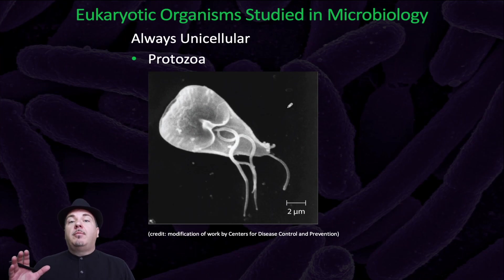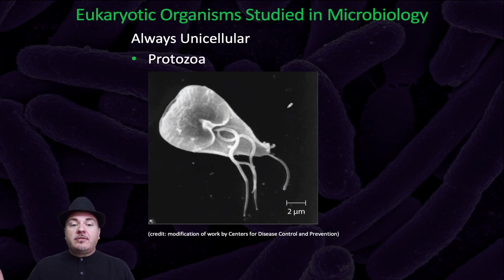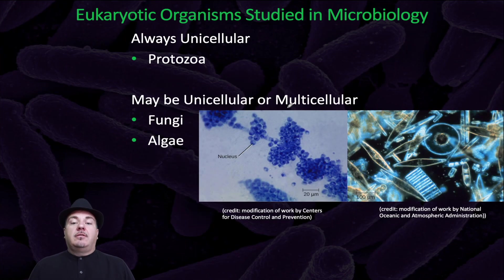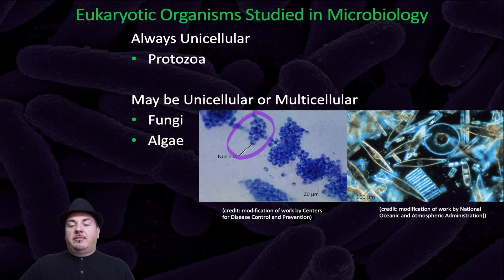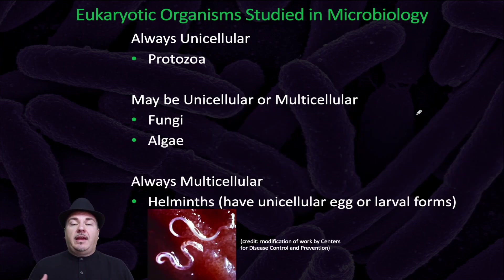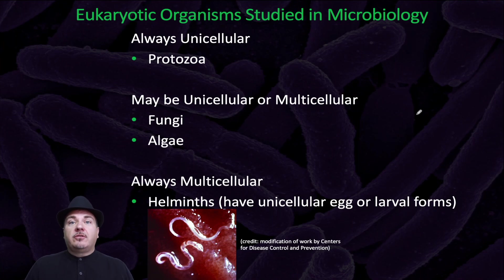There are a few types of eukaryotic organisms we tend to study in microbiology — not humans or plants. We study some eukaryotes that are always unicellular, for example the protozoa. We study eukaryotes that could be unicellular or multicellular — that would be the fungi or algae. And we study eukaryotes that are always multicellular, called the helminths. Even though helminths are multicellular and large enough to see with the naked eye, we study them in microbiology because they have unicellular larval forms.